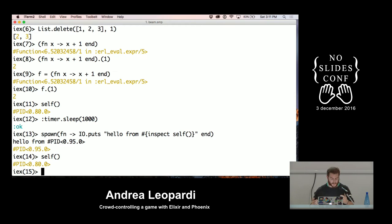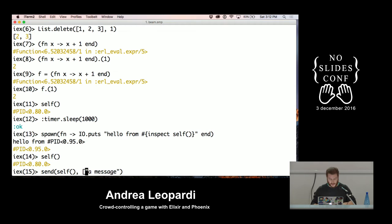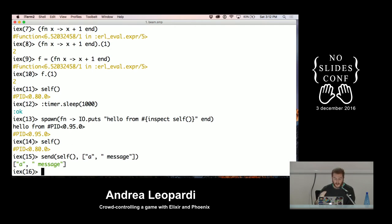Message passing has two primitives: one to send a message to a process, and one to receive messages from other processes. A message can be any Elixir term. The send primitive takes a PID and then a message — that can be anything, a list, anything. It will send the message, return the value you sent, and return right away. This is an asynchronous operation. You have no confirmation that the message has been delivered. You have a guarantee it will be delivered at some point on the same node if no errors happened, but you don't know when and you're not sure the other process acknowledged receipt. You have to implement that manually.